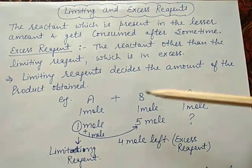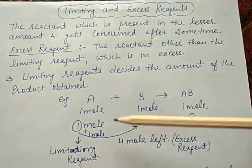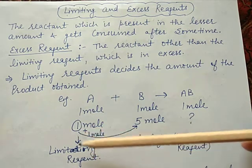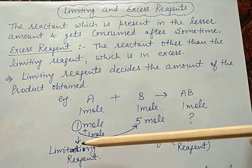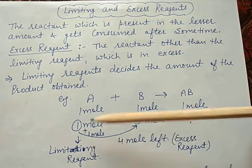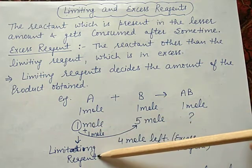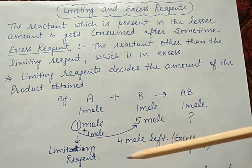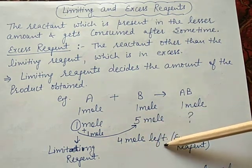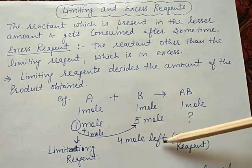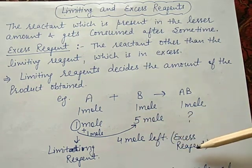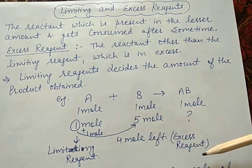So we can see that the reactant which is present in lesser amount and gets consumed during the reaction is called the limiting reagent, and the reactant other than the limiting reagent which is present in excess is called the excess reagent.